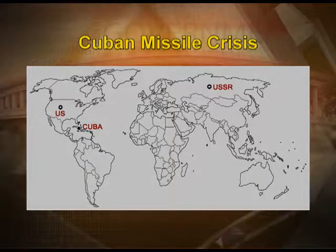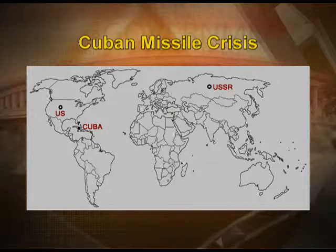So far, America had enjoyed geographical isolation and was never severely attacked other than at Pearl Harbor. The map shows the distance between Cuba and the mainland of the US, and also the location of the US, Cuba, and USSR respectively. You can see how far the USSR is, whereas Cuba is quite close. With the vast ocean expansion on both sides, the US remained isolated. However, with the installation of missiles in Cuba, the US for the first time came under the direct threat of attack from a major country.